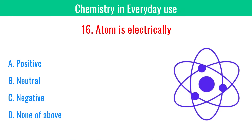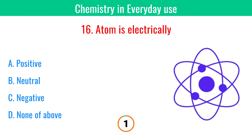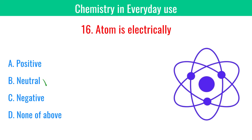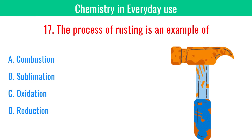An atom is electrically neutral. The process of rusting is an example of oxidation.